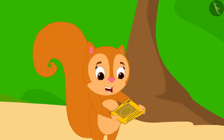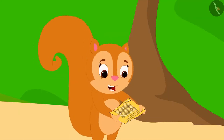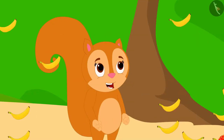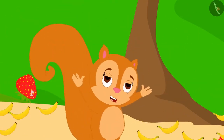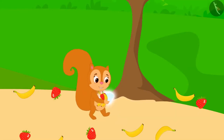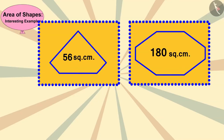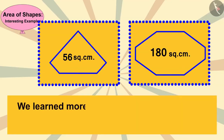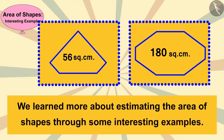Chanda also found the area of the diamond as 180 square centimeters. As soon as she wrote this answer on the paper, the paper disappeared and fruits began to shower from the sky. Chanda became very happy, gathered some fruits, took her diamond, and happily walked towards her house. In this video, we learned more about estimating the area of shapes through some interesting examples. In the next video, we will see some fun concepts related to this.